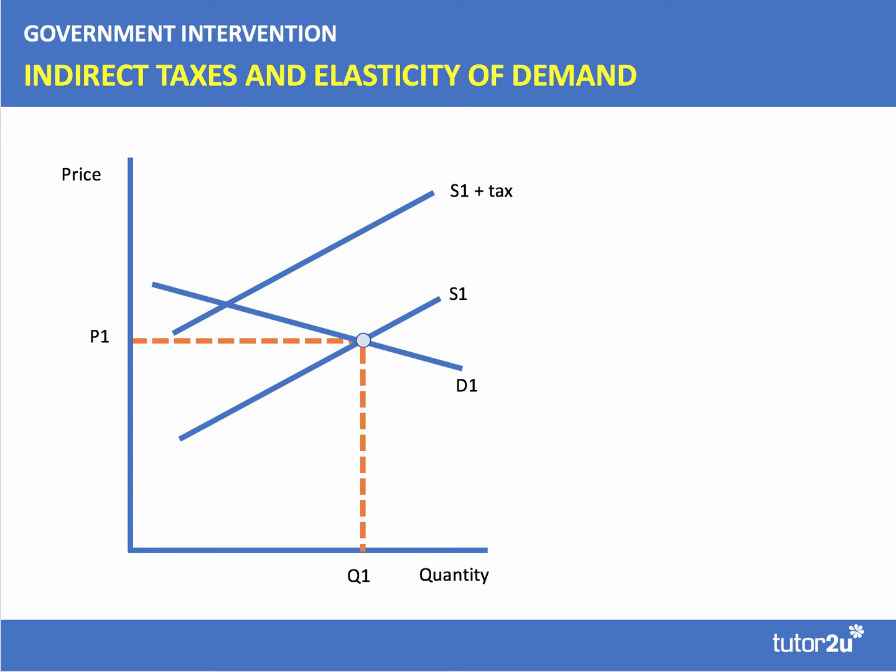The main effect of the tax is to cause an increase in price. After the tax, the new equilibrium price increases to P2 and the quantity falls from Q1 to Q2. Notice here that the demand curve of this product has been drawn as relatively price elastic, and one of the consequences of that is that the price won't increase by the full amount of the tax.